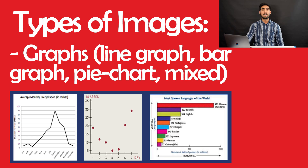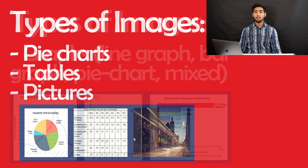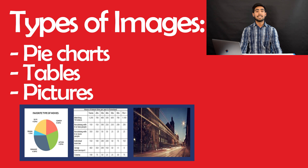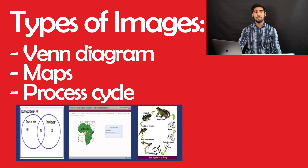You can get any type of image. You can get a graph, which means a line graph, bar graph, or pie chart, or it could be a mixture as well. You can also get tables, pictures, Venn diagrams, maps — which could be different continents or different countries — or even a process cycle.